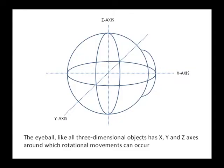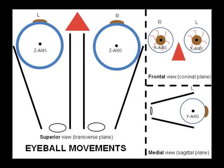Now that we've identified the extra-ocular muscles on a model, we can understand their actions by looking at some animated slides. Here we're looking at the eyeball from its lateral aspect, and I've put on three Cartesian axes. We have the x-axis passing directly through the pupil, the y-axis passing through the lateral aspects of the eyeball, and the z-axis passing through the superior and inferior most aspects of the eyeball. These axes are important for ascertaining position and understanding movements.